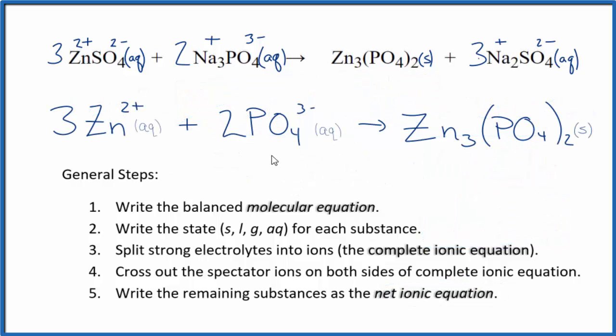So this is the balanced net ionic equation for zinc sulfate plus sodium phosphate. You'll see that charge is conserved. We have three times two plus. That's six plus. Two times three minus. That's six minus. Add them up. You have a net charge of zero here. This zinc phosphate, it's a neutral compound. Net charge of zero. So we've balanced charge. And if you count the atoms up, they're balanced as well.